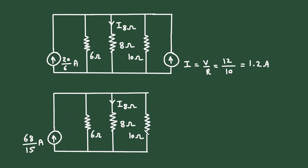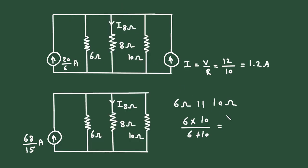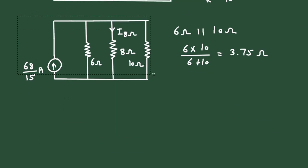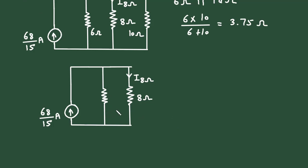Here we can see this 6 ohm and this 10 ohm are connected in parallel, so we can solve them. 6 ohm parallel with 10 ohm: it will be 6 into 10 divided by 6 plus 10, which is 3.75 ohm. We can simplify the circuit and this will now be a single resistor of 3.75 ohm.